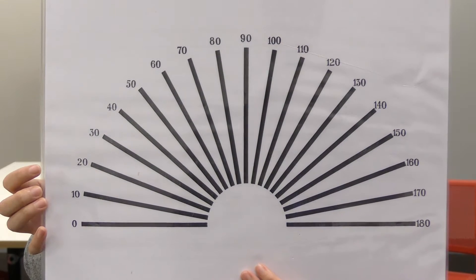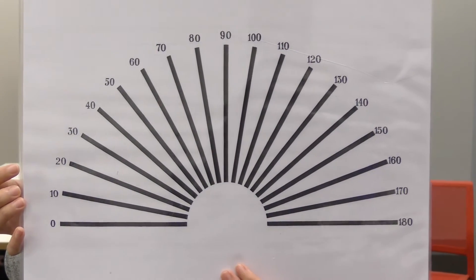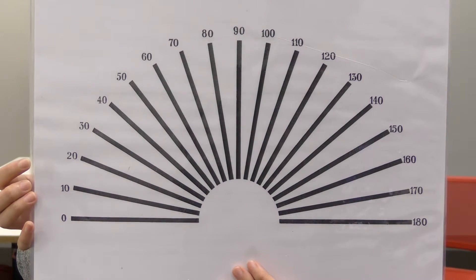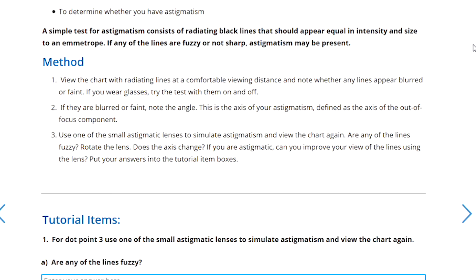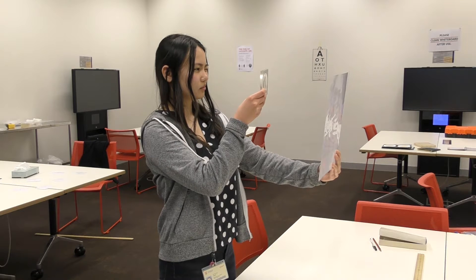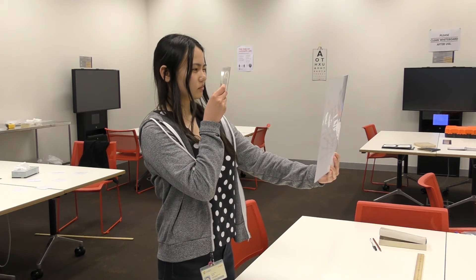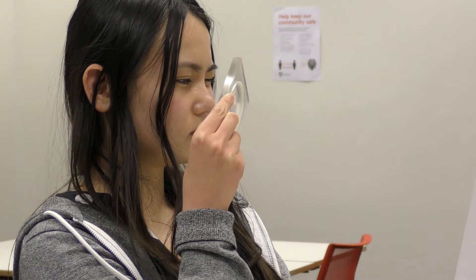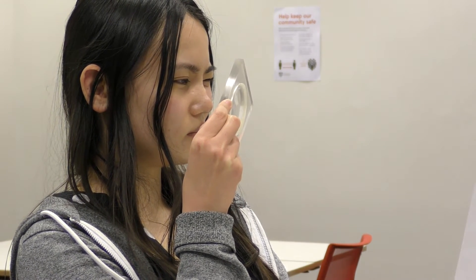For a normal sighted person all the lines will appear in focus and so to simulate astigmatism we'll use a special lens that has an irregular curvature. Following step 3 in the instructions, look at the chart using the lens. Are any of the lines fuzzy or out of focus? In which case make a note of the angle. Then rotate the lens and see whether the axis of out of focus lines change.